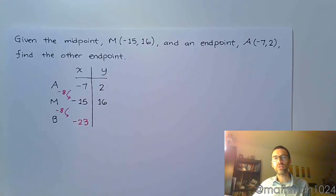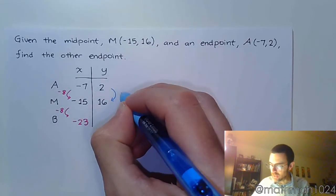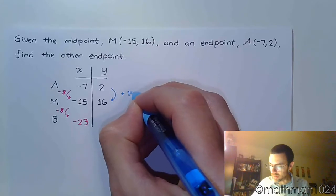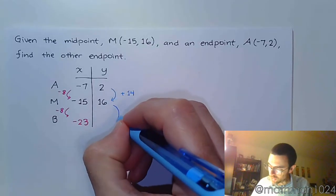And let's see what happens on the y side. To go from 2 to 16, you have added 14 to those coordinates. Well, you're only halfway there, so you've got to do that again, add 14.